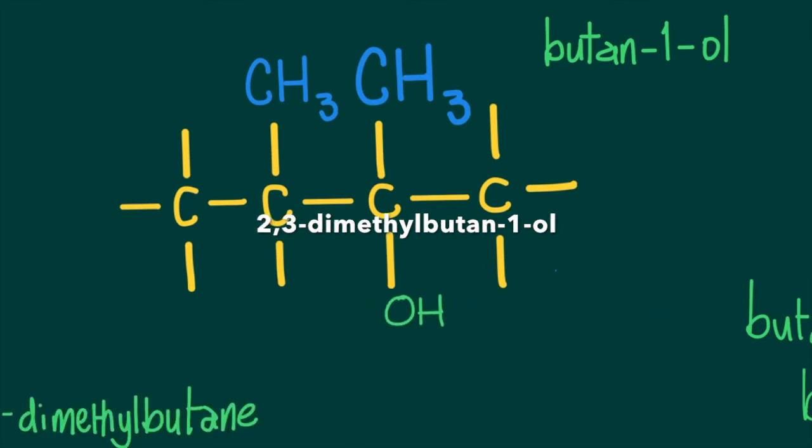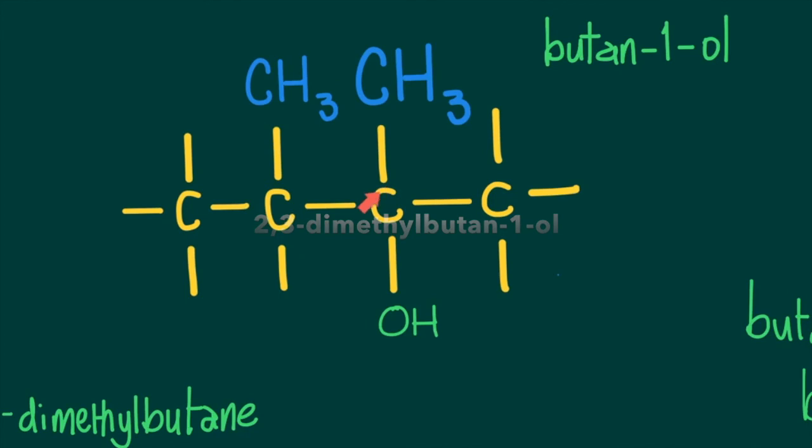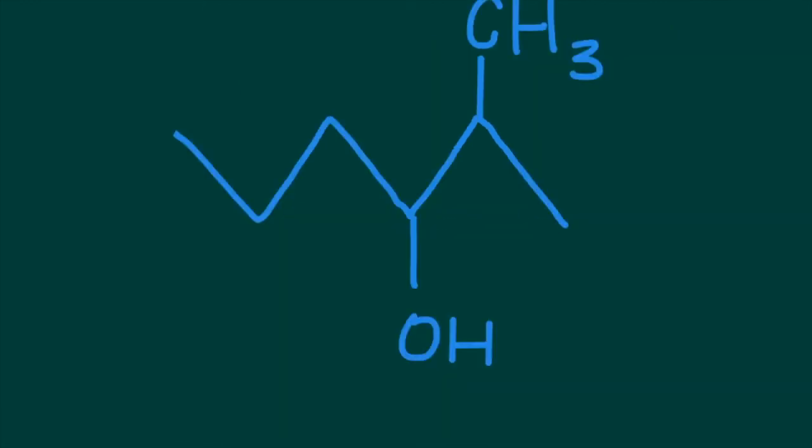But if we were to place the OH here, then we would have no way of labeling this carbon as carbon number one. Because the longest straight chain is four carbons, and if this were to become carbon one, then the longest straight chain would only be three. So it means that this structure would have to be called 2,3-dimethylbutan-2-ol.